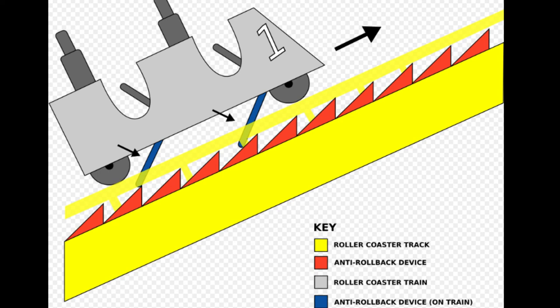There are obviously different types of systems to propel coasters up, like launches and cable lift hills. I can go into all those in separate videos if you like these. This is just a basic knowledge video of how chain lifts work.